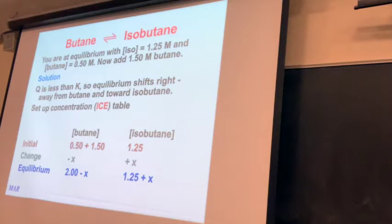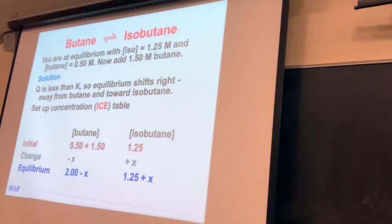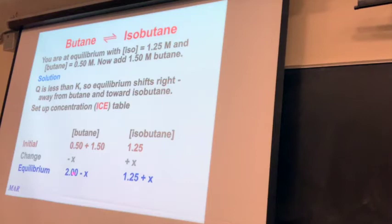You can use the ICE table to figure out the new concentrations. Initially, you have butane from the two sources — what was there initially and what we added — giving 2.00 mL total. The isobutane stays at 1.25. Because Q was less than K, we have a shift to the product side, so isobutane goes up (+X) and butane goes down (-X). At equilibrium: butane = 2 - X and isobutane = 1.25 + X.